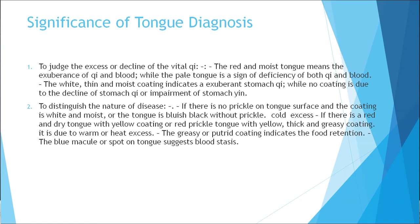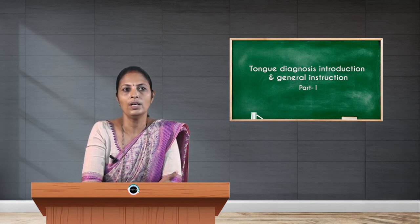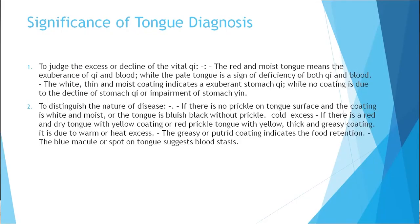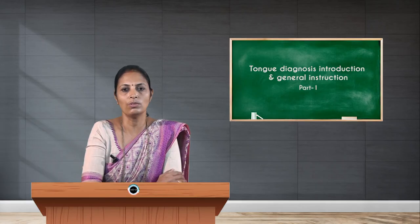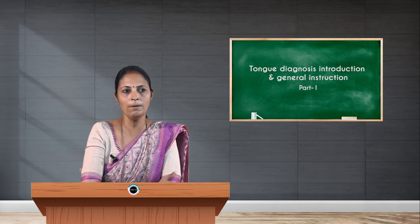Another point is to diagnose and distinguish the nature of disease. If there is no prickle on the tongue surface and the coating is white and moist, or if the tongue is bluish-black without prickle, that indicates cold excess. If there is a red and dry tongue with yellow coating, or red prickle on the tongue with yellow thick or greasy coating, that indicates heat excess. This is how we can identify deficiency or excess as well as cold or heat conditions.